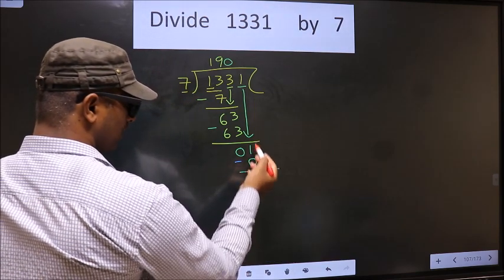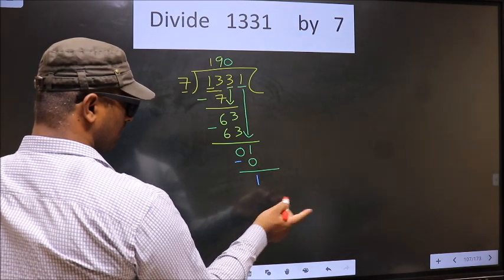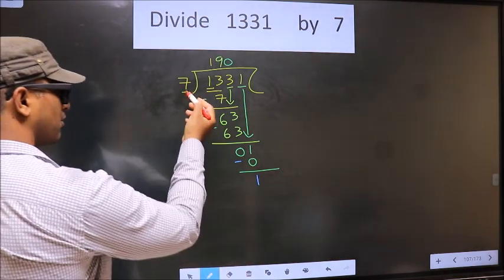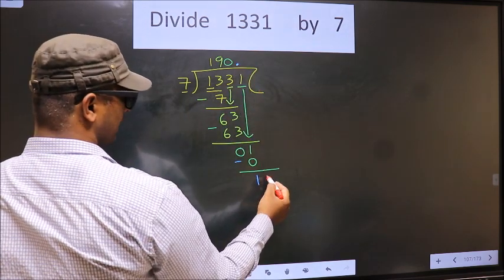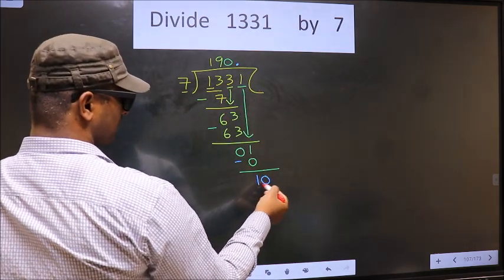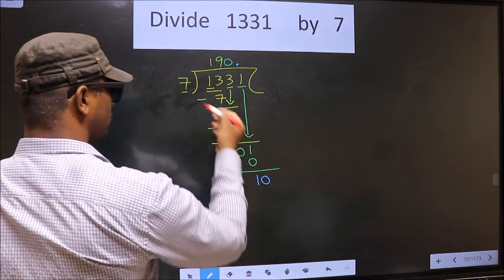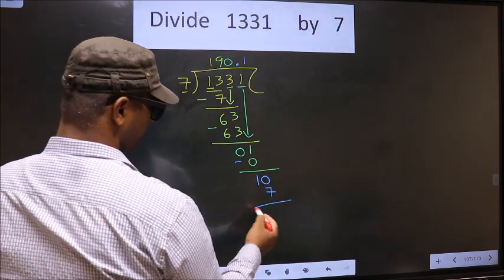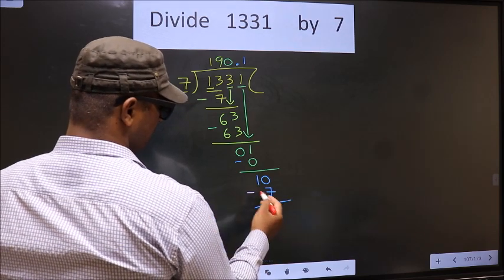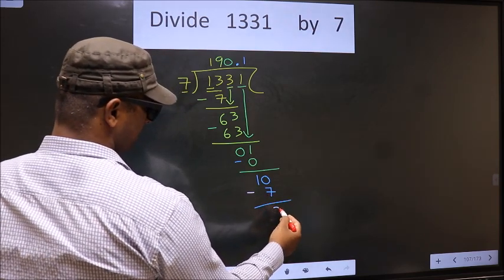Over here we did not bring any number down. And 1 is smaller than 7. Now you can put a dot and take 0 here. So 10. A number close to 10 in 7 table is 7 once 7. Now you subtract.